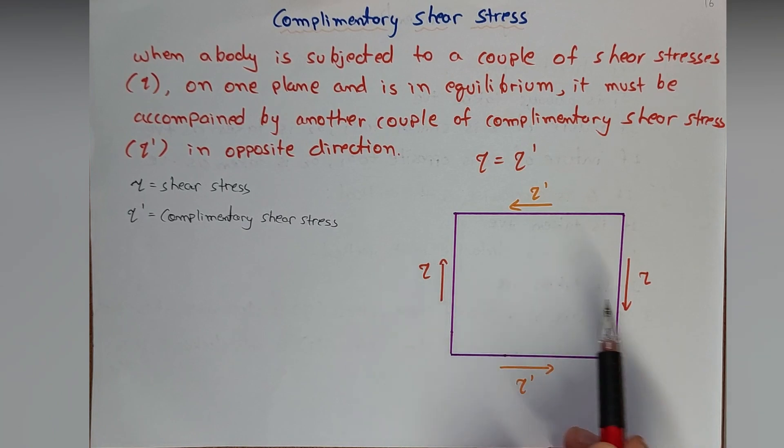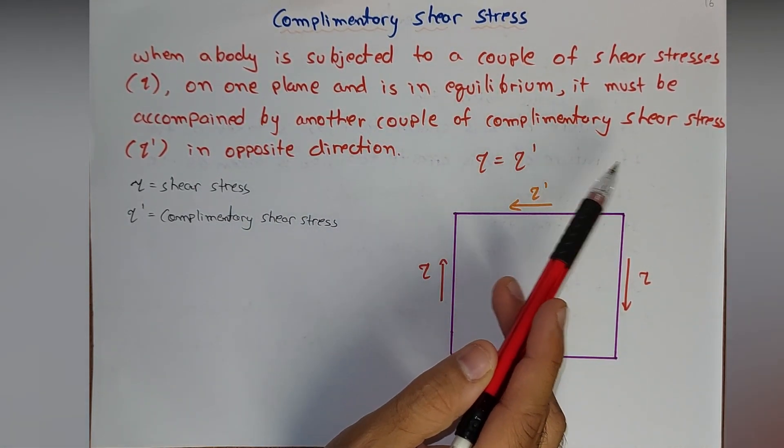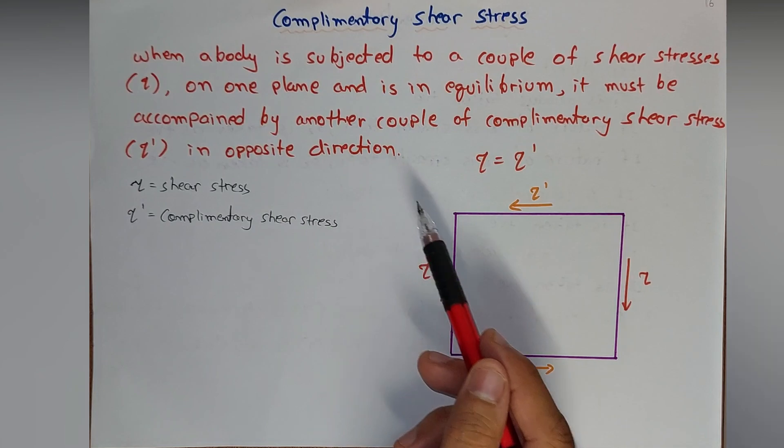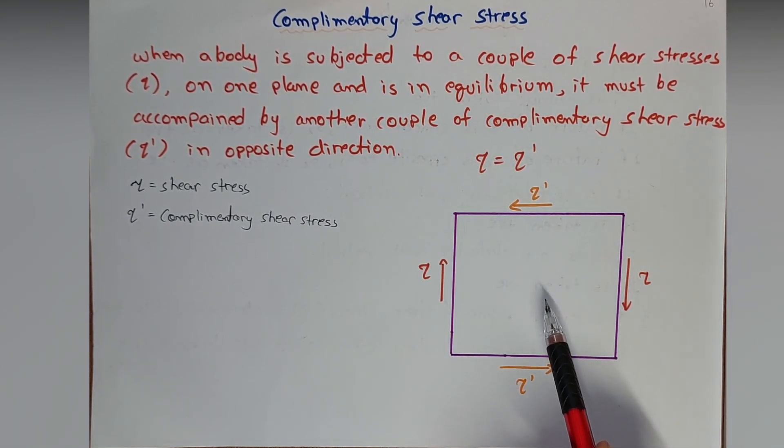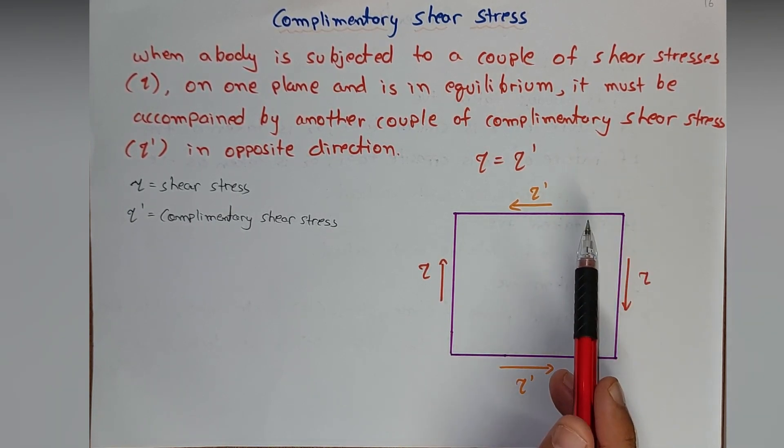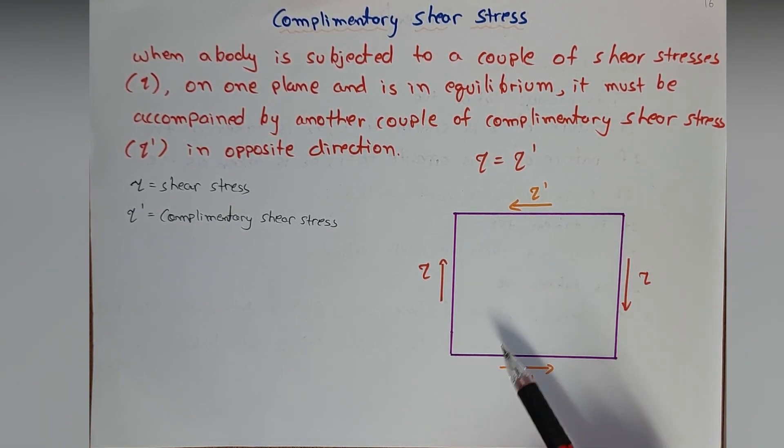It must be accompanied by another couple of complementary shear stresses tau dash in opposite direction. It simply means if this couple is acting and still the body is in equilibrium, it is not rotating, then it means that there is another couple in opposite direction which is opposing and keeping this stable.